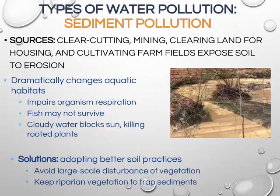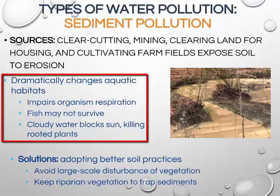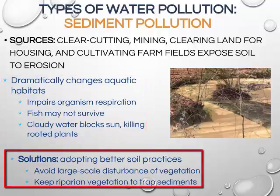Sediment pollution is caused by clear cutting, mining, and clearing land for a variety of uses. Soil will flow off the land if it is cleared but not covered with vegetation or erosion control products. This sediment is carried to streams and ponds through runoff, causing dramatic changes in aquatic habitat. The sediment clogs streams, making photosynthesis difficult, impairs organisms' respiration, and causes the stream to fill in.